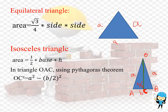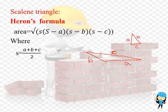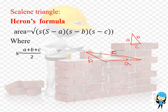The area of the isosceles triangle is half into B into H. The next triangle is the scalene triangle, where all three sides are not equal — A is not equal to B and B is not equal to C. Acute angle triangles and obtuse angle triangles can come under scalene triangles. To calculate the area of the scalene triangle, we use Heron's formula: Area equals the square root of S into (S minus A) into (S minus B) into (S minus C), where S equals (A plus B plus C) divided by 2.